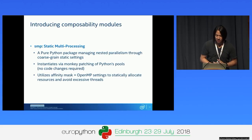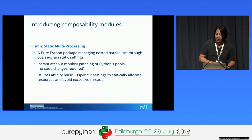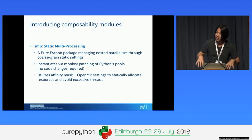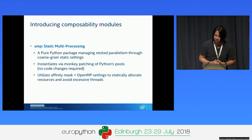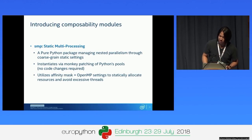Another package in this space is Static Multiprocessing, or SMP. It's a pure Python package that manages nested parallelism through coarse-grained static settings. It augments your parallelism by taking the rules defined by your parallelism and the types of environment variables, passing them down to inherited processes to control oversubscription. It handles more structured workloads and also instantiates via monkey patching. SMP uses affinity masks and OpenMP to statically define and allocate resources to avoid excessive threads.